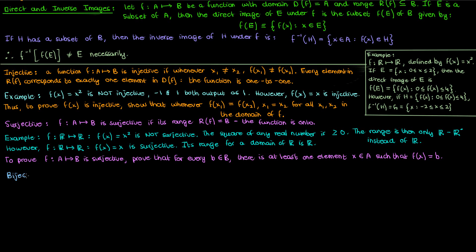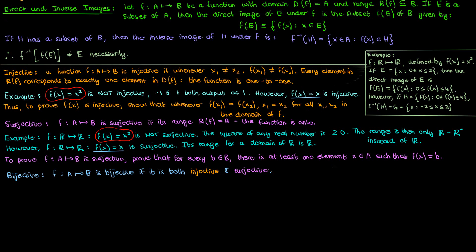Lastly, a bijective function is one that is both surjective and injective. So f(x) = x is clearly bijective while x² is clearly not. Proving that a function is bijective should be self-explanatory — just prove that it's both injective and surjective.